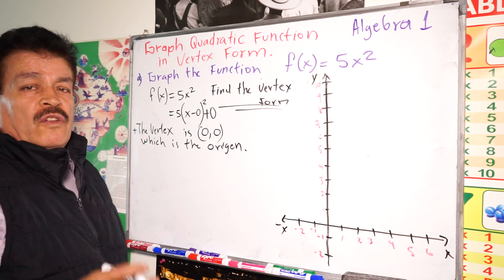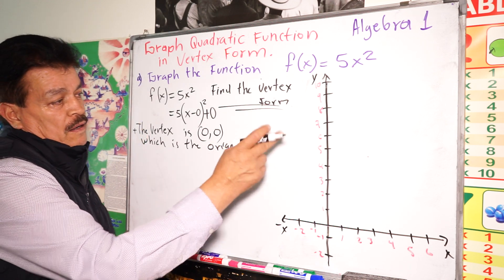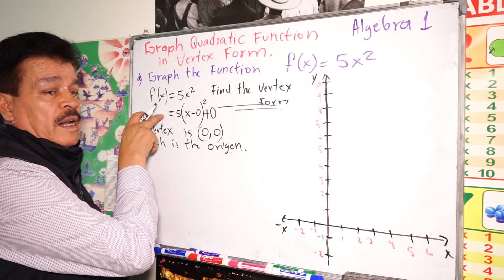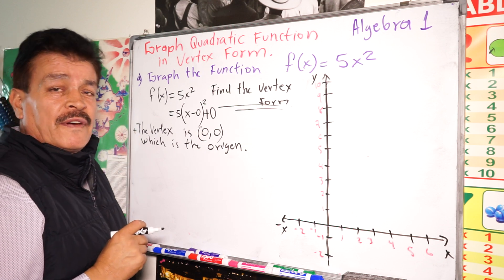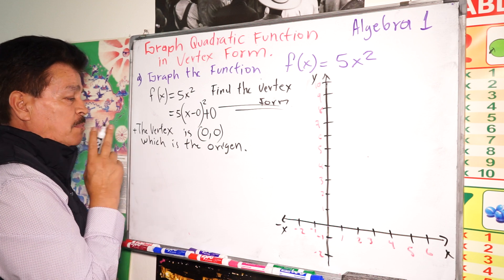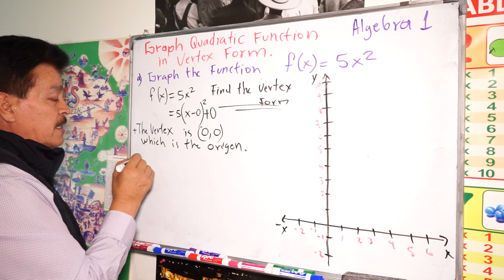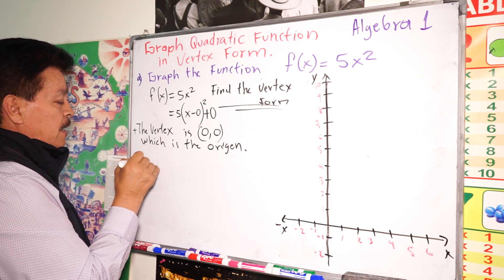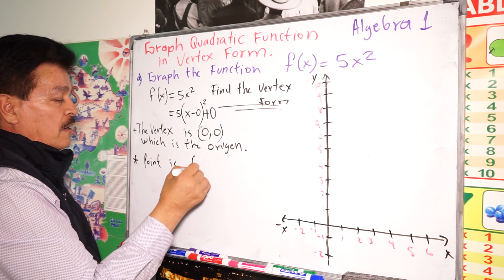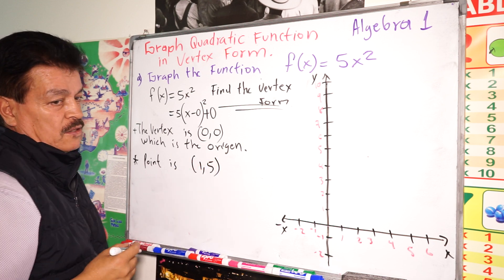Now, look for another point in the parabola. We're talking about finding another point on the parabola with integer coordinates. One such point is (1, 5).